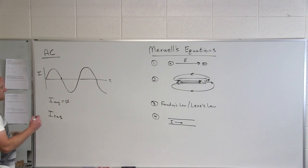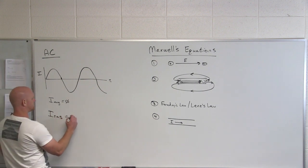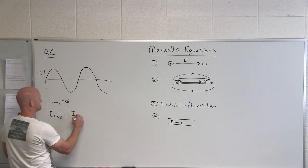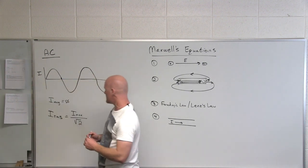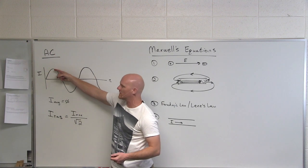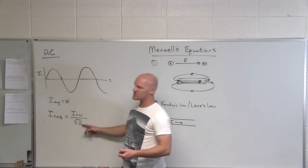And so what you find out is that your RMS, this root mean square, is equal to your maximum, your peak currents, either side, divided by the square root of two.